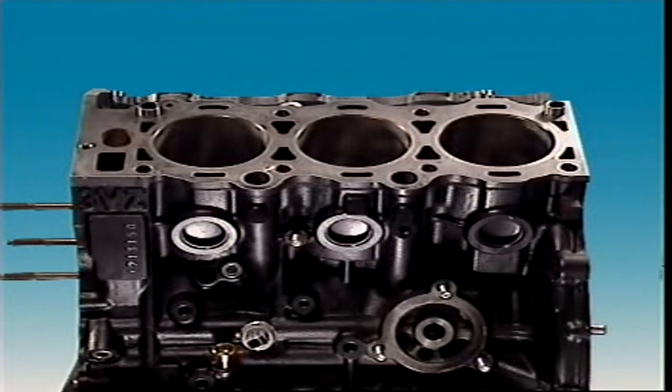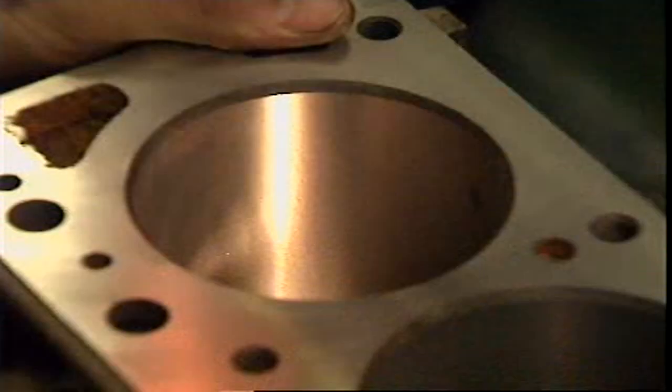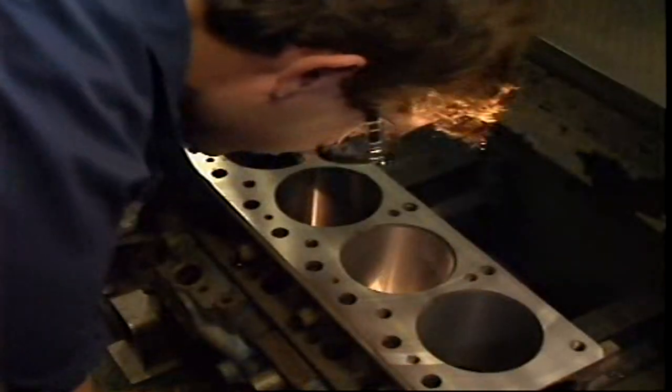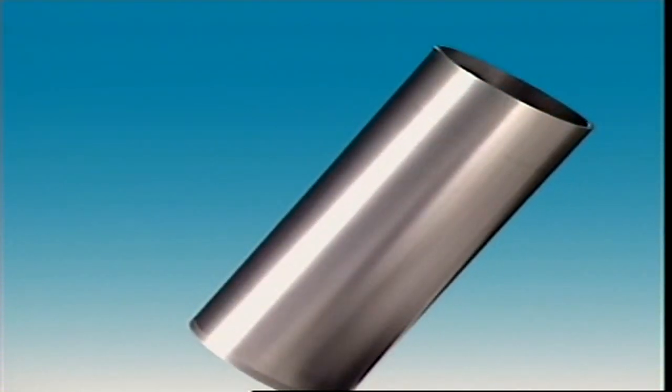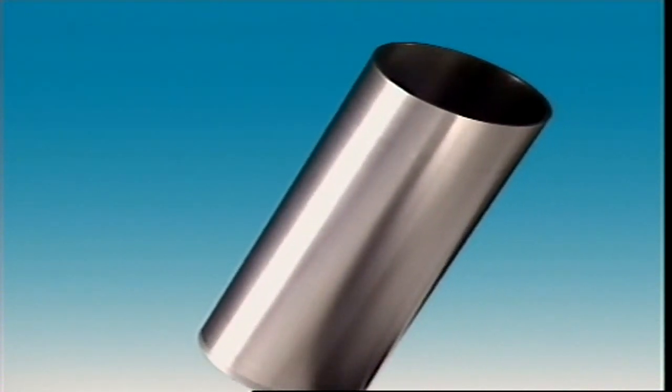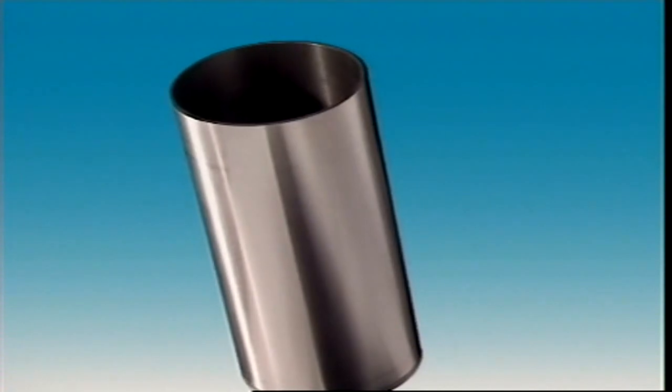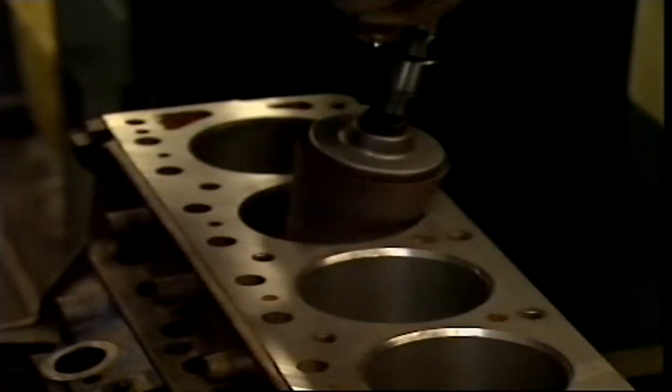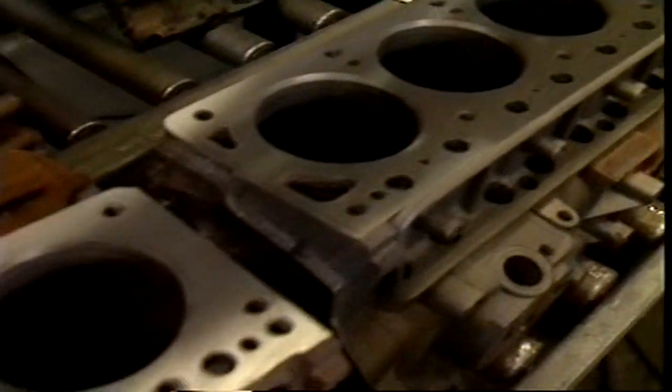The dry sleeve can be cast in or pressed into a new block, or used to recondition badly worn or damaged cylinders that can't easily be rebored. It's a pressed fit in its bore in the cylinder block. Its wall is about two millimeters thick. Its outer surface is in contact with the block for its full length. Its top finishes flush with the top of the block and can hardly be seen.